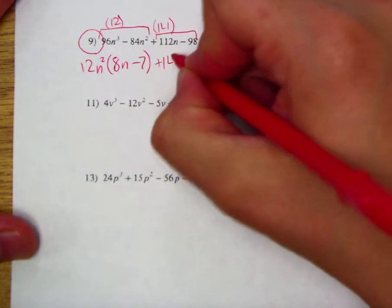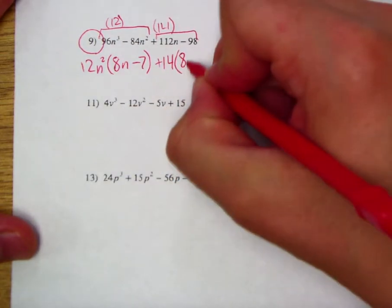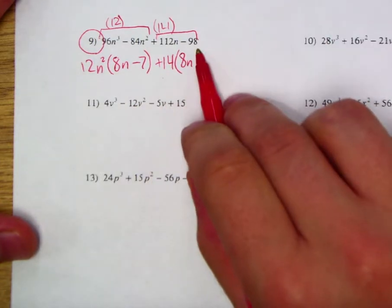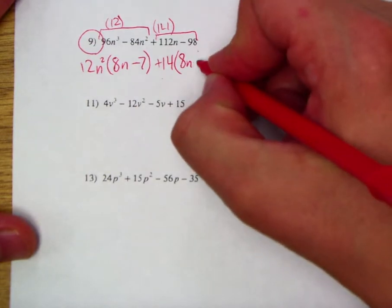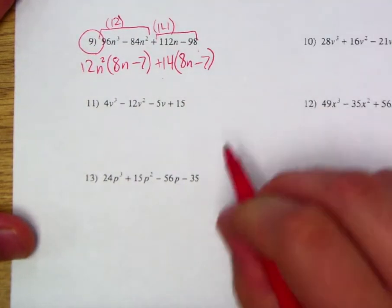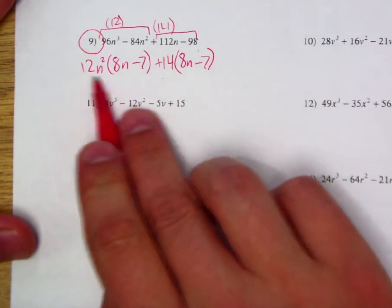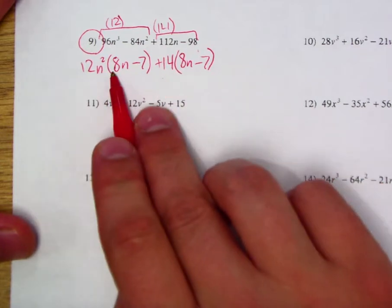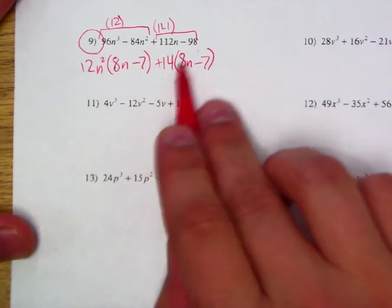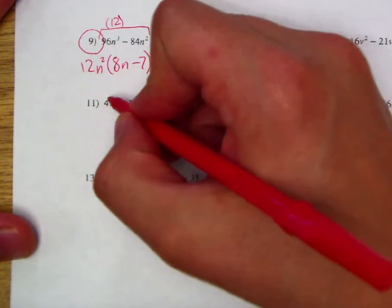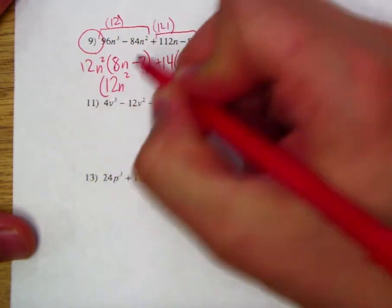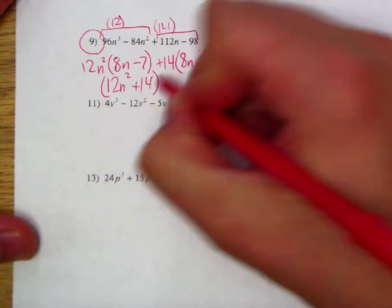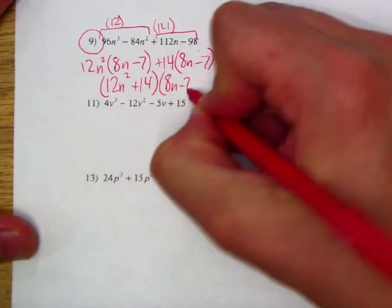What about the next couple of terms? If I factor out 14, 14 would go into 112 exactly 8 times, and then I'm going to have 98 left, which would go 7 more times. Well, look at that. So I'm going to have 14 times an 8n, and 14 goes into 98, well, you guessed it, 7 times. Or negative 7 in this case. Now that I've factored that out, 12n² and 14, I've got my 8n minus 7, my other 8n minus 7, and now I can say how many of those do I have total? I have exactly 12n² plus 14 of those (8n-7)s.